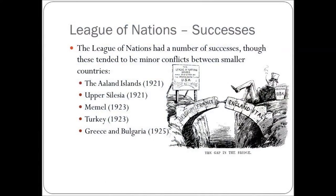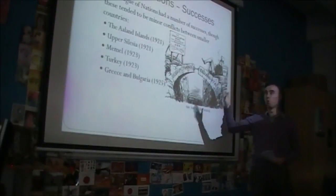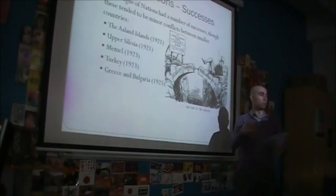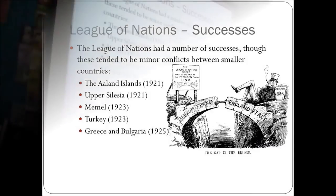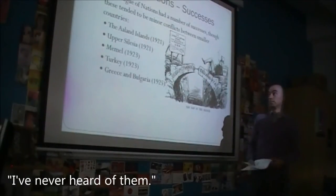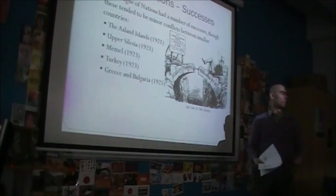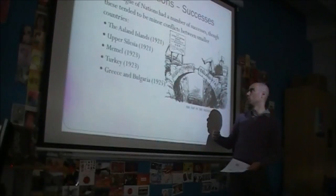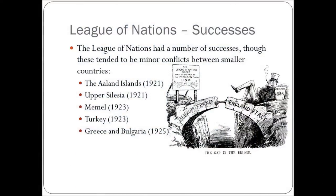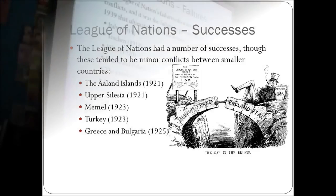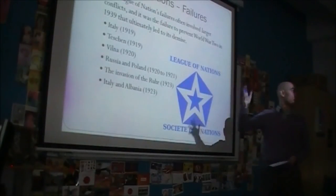The League's successes involved minor conflicts — things like the Aland Islands, Upper Silesia, Memel, Turkey, Greece, and Bulgaria. These are mostly small regions in Europe without large standing armies or major European powers involved. There's a well-known cartoon showing all the member countries in the arch, with the USA — the keystone — refusing to join. That was a big factor holding back the League of Nations. President Woodrow Wilson actually wanted to join, but Congress refused. The failures of the League were much larger than its successes.